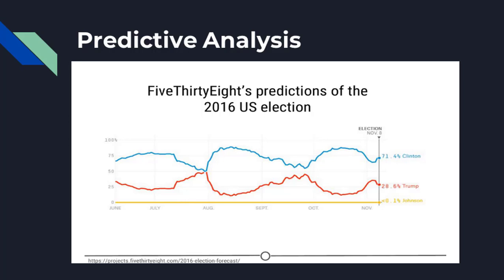Prediction is hard, especially about the future — it is not easy to gauge how well you will predict an event until it has come to pass. One example is FiveThirtyEight, where Nate Silver tries to predict the outcomes of US elections and sports matches using historical polling data, trends, and current polling to build models. FiveThirtyEight accurately predicted the 2008 and 2012 elections and was widely considered an outlier in 2016 as one of the few models to suggest Donald Trump had a chance of winning.